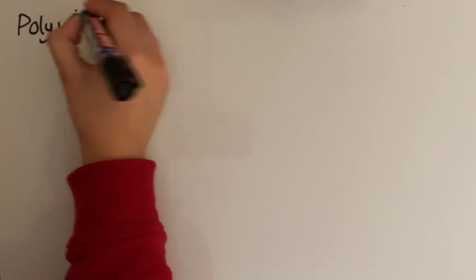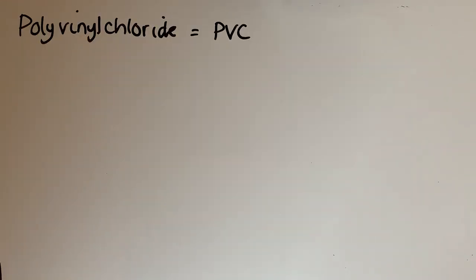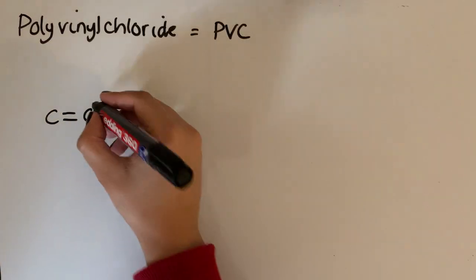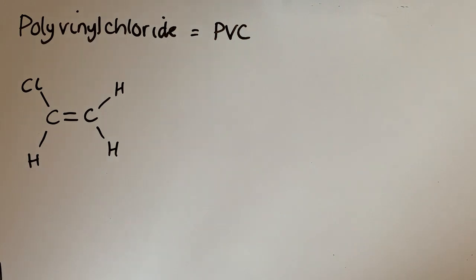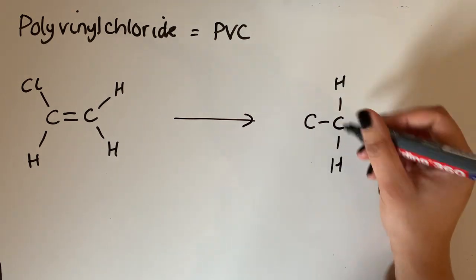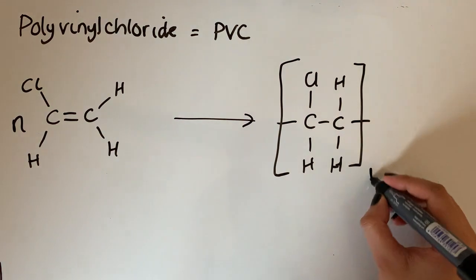Another polymer is polyvinyl chloride, also known as PVC, which is used for things like window frames and door frames. The monomer that makes PVC is chloroethene — one of its old names was vinyl chloride, which is why the polymer is called polyvinyl chloride. Drawing one repeat unit of PVC gives a structure similar to polyethene but with a chlorine substituent, and we balance with N lots of the monomer giving N lots of the repeat unit.